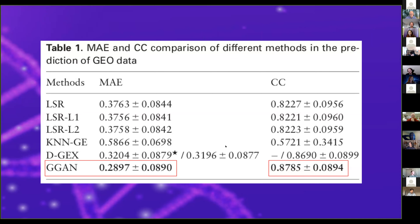For the first GEO dataset, on the left side we have the different methods and mean absolute error, and on the right side the concordance correlation coefficient. The generative GAN's MAE was 0.2, roughly 10% better than the deep learning model and much better than the linear and square regression models. Similarly on the CCC.